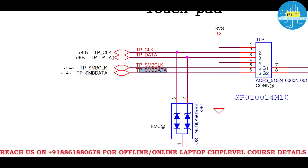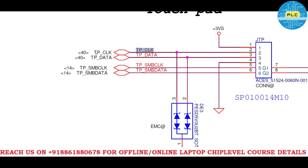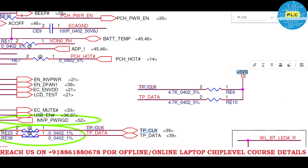The TP clock and TP data are connected bidirectionally to the IO, while the TP SMB clock and TP SMB data are bidirectionally connected to the PCH. You have to take care of the voltage here — you won't get three volts on these two lines. You will get five-volt suspend voltage on the TP clock and TP data, which are directly and bidirectionally connected to the IO. Make sure this is five volts, not three volts.